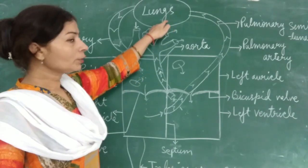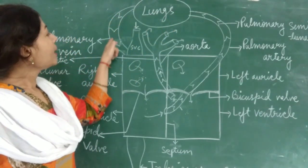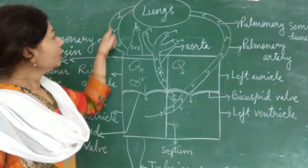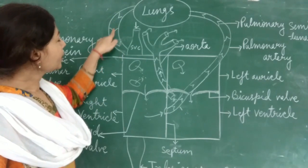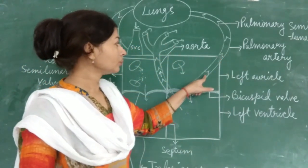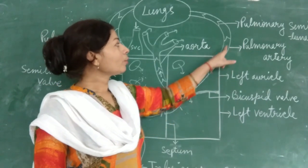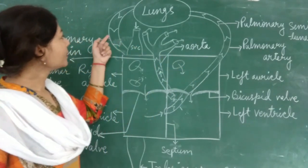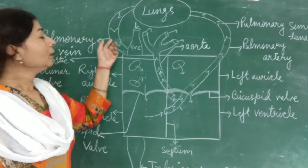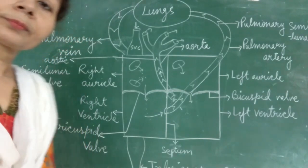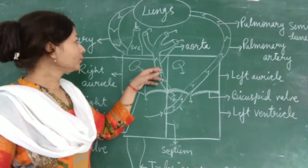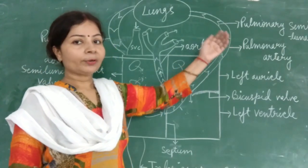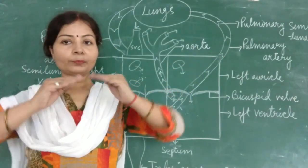The blood is purified in the lungs and it comes back into the left auricle through the pulmonary vein. You can see I have drawn this structure in both the pulmonary vein and pulmonary artery — there are also valves present in the pulmonary artery as well as the pulmonary vein to avoid backflow of blood.